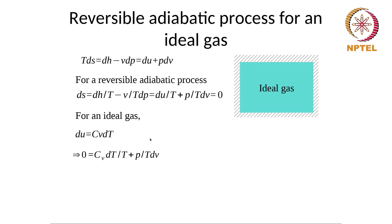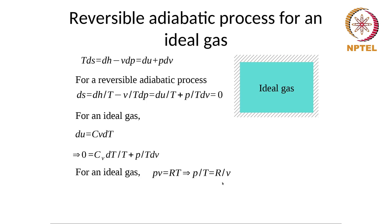This is something we have used earlier when finding relations for PV or TS diagrams. For an ideal gas, PV = RT, where P is pressure, V is volume, R is the specific gas constant, and T is temperature. We also know that P/T = R/V. Substituting P/T with R/V, we get Cv dT/T + (R/V) dV = 0.